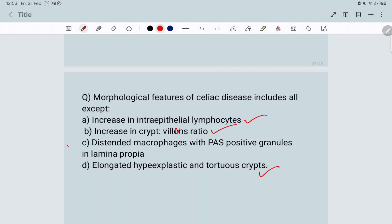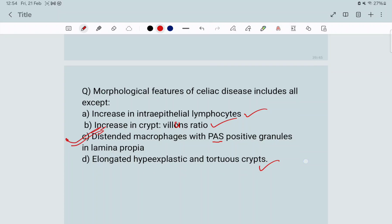What is the C option? The answer will definitely be C because we have not discussed about any PAS positive granules in lamina propria. What is this? What is this feature of? This is feature of Whipple's disease.